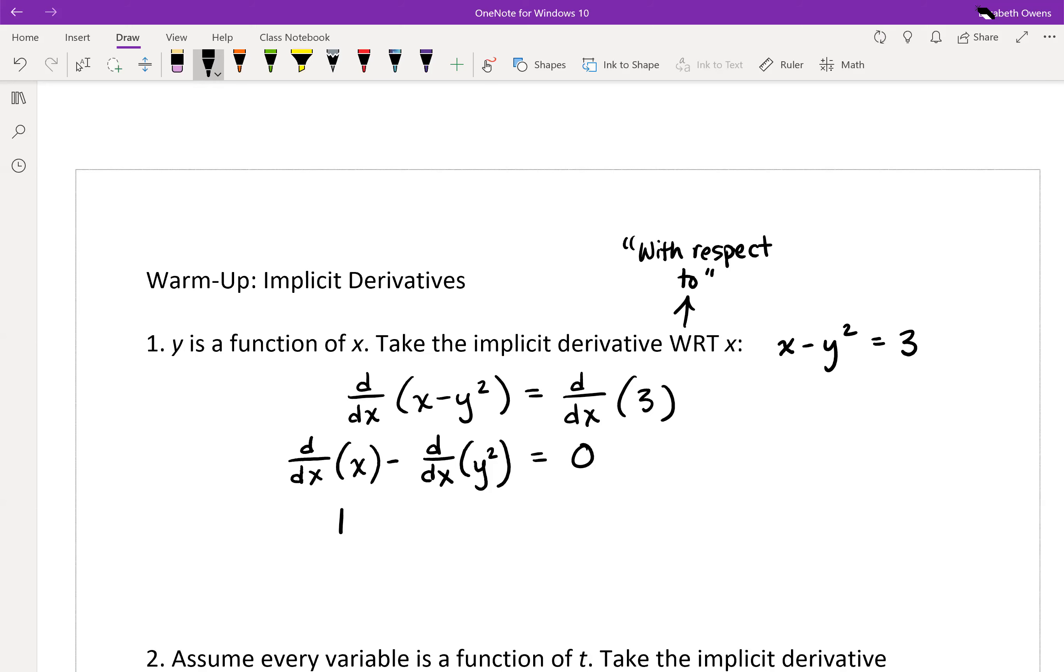And then for the derivative with respect to x of y squared, that's where it gets more interesting and we really have to go implicit on this. So remember, we're going to treat this like a little tiny chain rule. We're doing derivative with respect to x of y squared, but remember that y is actually a function of its own. It's a function of x, it tells us right here. So we're really looking at a little tiny chain rule there.